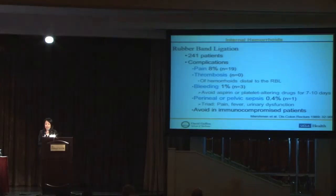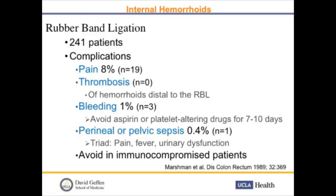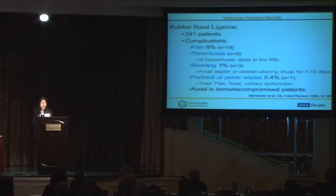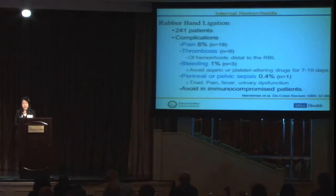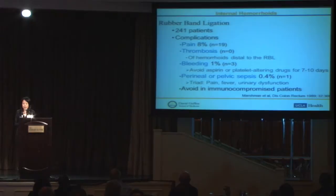With rubber band ligation, pain occurred in approximately 8% of patients in one study. Thrombosis and bleeding can occur, so we want to avoid it in patients using aspirin or platelet-altering drugs. The most severe but fortunately infrequent complication is perineal or pelvic sepsis, characterized by a triad of pain, fever, and urinary retention. We want to avoid this procedure in immunocompromised patients. Patients with pelvic sepsis may need hospital admission, intensive care, IV antibiotics, and may need to go to the operating room for debridement — it's a very serious complication.